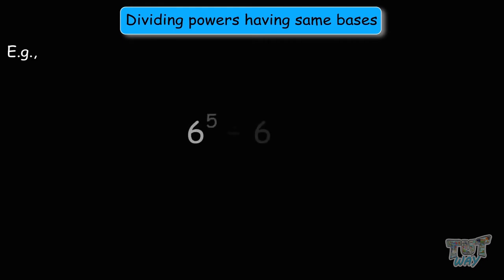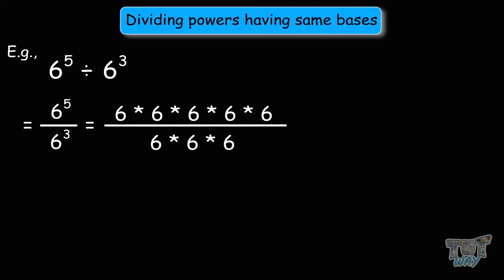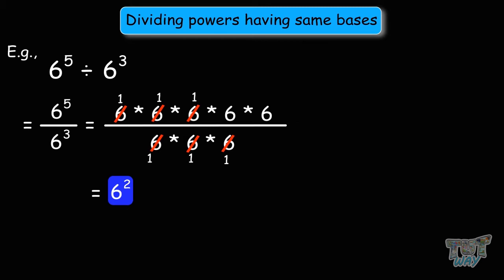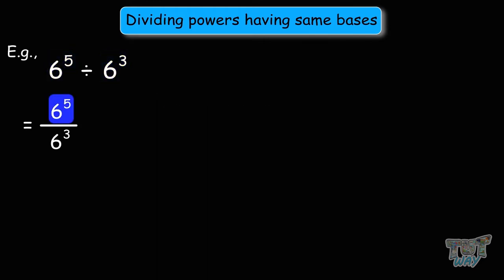Next question: 6 to the power of 5 divided by 6 to the power of 3. 6 to the power of 5 means 6 multiplied by itself 5 times, and 6 to the power of 3 means 6 multiplied by itself 3 times. We cross out 3 sixes from top and bottom, and are left with 6 times 6, which is 6 to the power of 2. Using the law of exponents: 6 to the power of 5 minus 3 equals 6 to the power of 2.